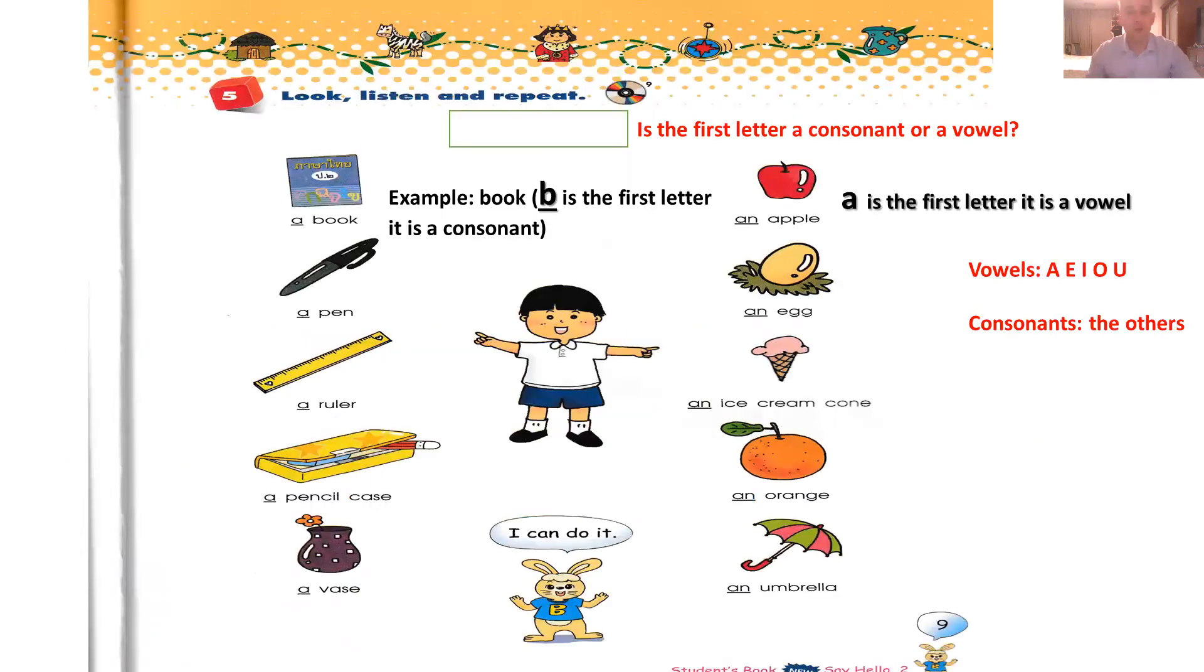First, so open your book page 9. Okay, so I change a bit the exercise. Teacher Frank asks you, is the first letter a consonant or a vowel? Take a look on the first picture, a book. So book B is the first letter. It is a consonant. And on the right, an apple. A is the first letter, it is a vowel.